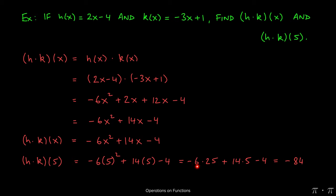So we have -6 times 25, which gives -150, plus 70 gives -80. Then -80 minus 4 is -84. That's our answer.